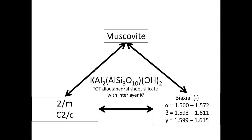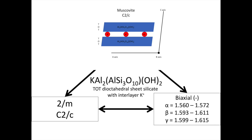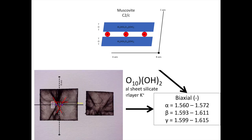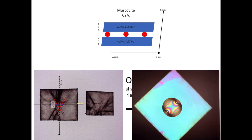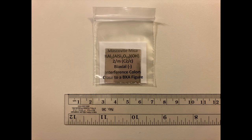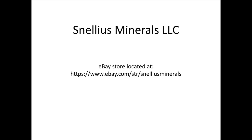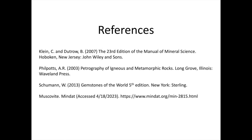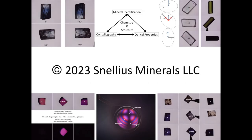For monoclinic minerals like muscovite, the axes of the optical indicatrix and crystallographic axes do not align perfectly. Only the b crystallographic axis and the Z direction through the indicatrix line up, though the c axis is close to X. The resulting almost-BXa interference figure allows us to identify the location of the b crystallographic axis. Remember: muscovite is defined by its chemistry and structure, which determine its crystallography and optical properties. If you'd like to try these experiments, pick up the oriented mica sheet from the Snellius Minerals eBay store.